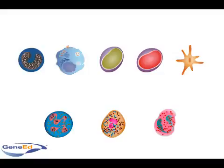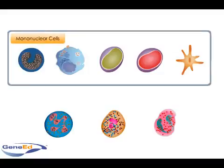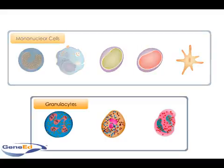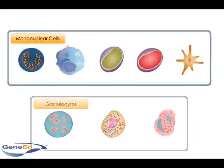White blood cells come in two groups: mononuclear cells and granulocytes. Experts classify white blood cell types by granule presence. Granulocyte white blood cells contain tiny chemical mediators called granules, while mononuclear cells do not.